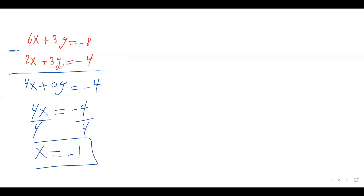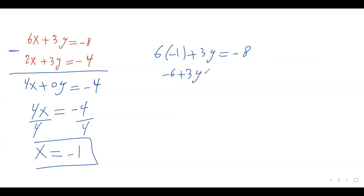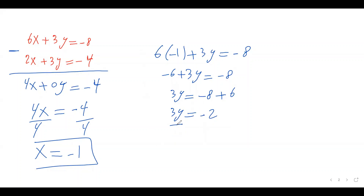So I eliminated one of the variables and solved for the other — that's the first two steps. Now the last step is to substitute this value into one of the original equations. It doesn't matter which one; you can choose the easiest one. I'll go with the first one: 6 times negative 1 plus 3y equals negative 8. That gives negative 6 plus 3y equals negative 8. So 3y equals negative 8 plus 6, which is negative 2. Divide both sides by 3, so y equals negative 2 over 3.